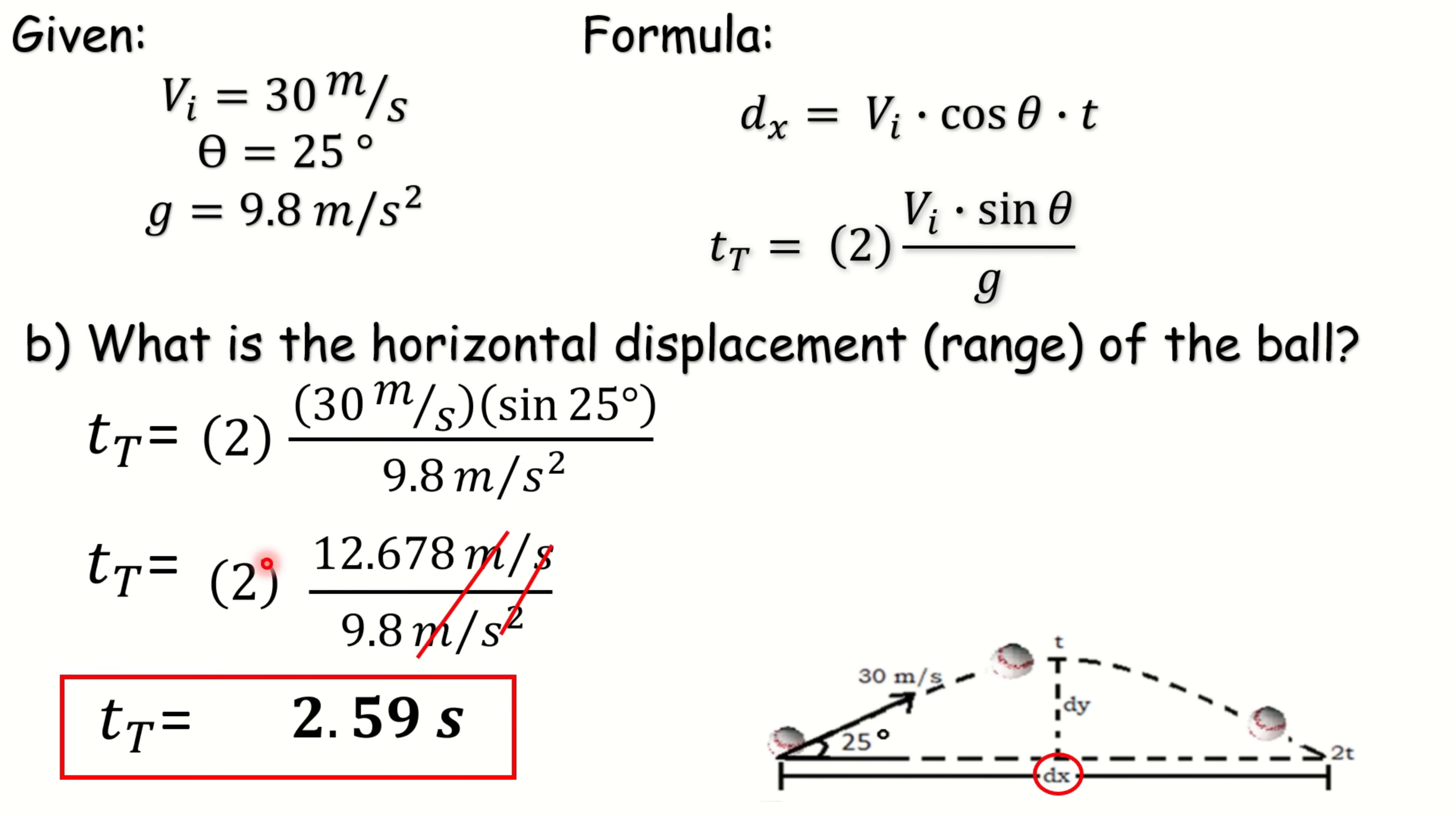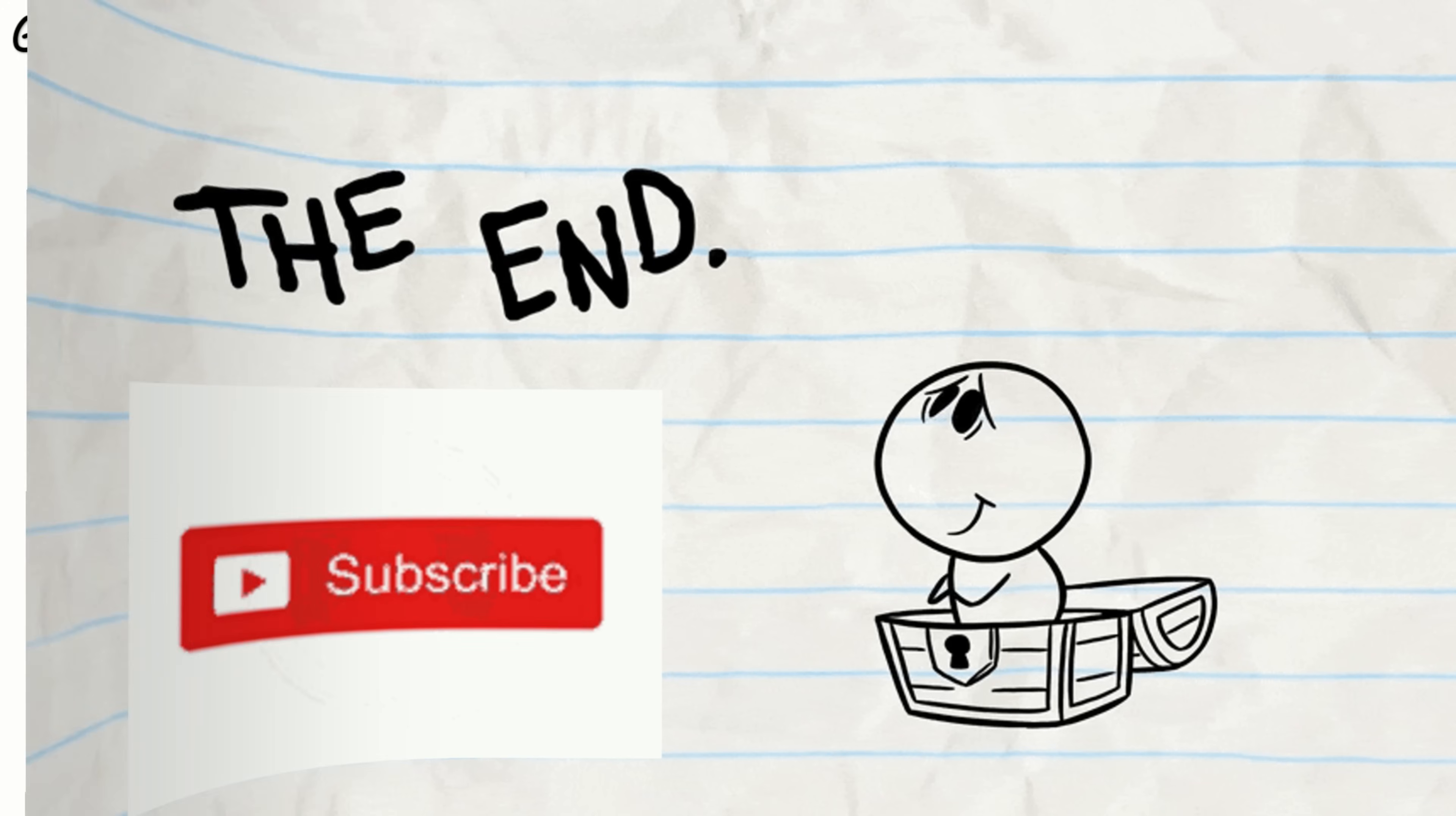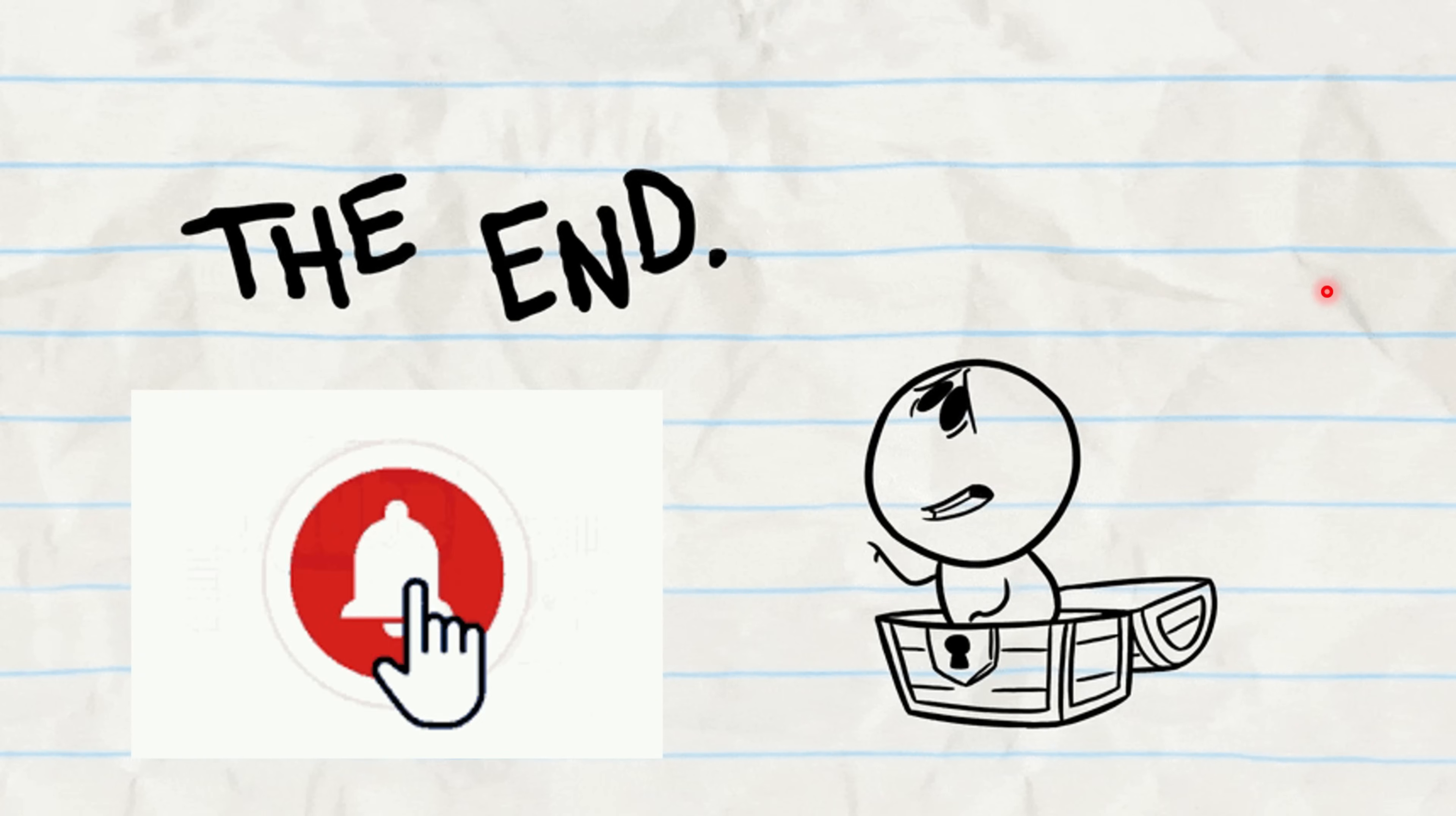Now, we can now solve for the value of DX. DX is equal to our VI, cosine theta, and the value of time. Multiplying these three quantities, our final answer is 70.42. Let us not forget to cancel the units. Therefore, our final answer is 70.42 meters. And that ends our lesson about projectile motion.